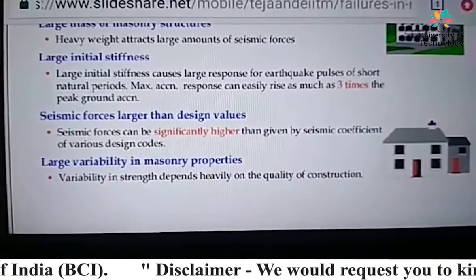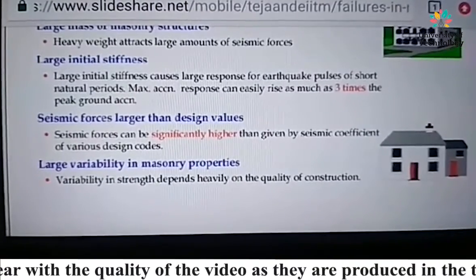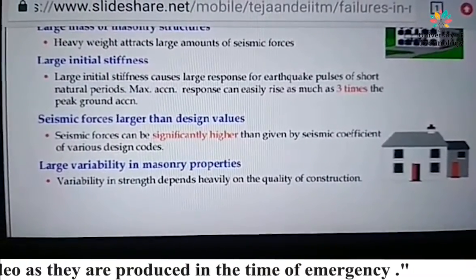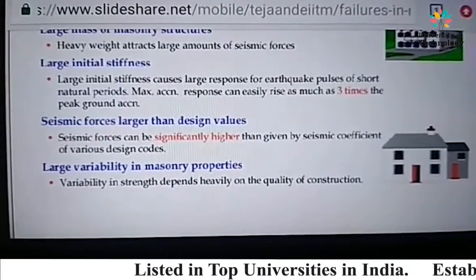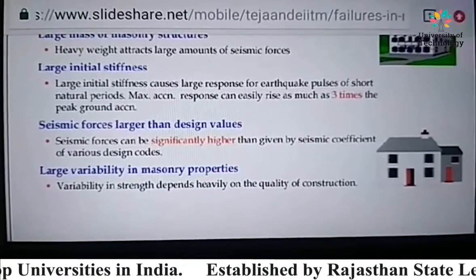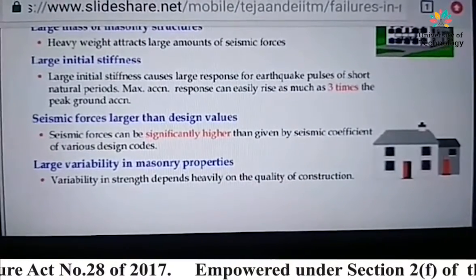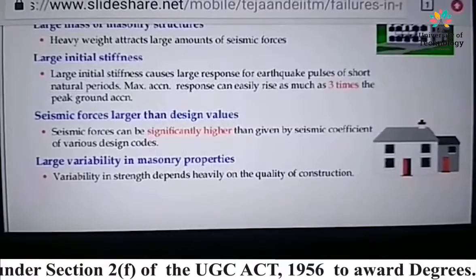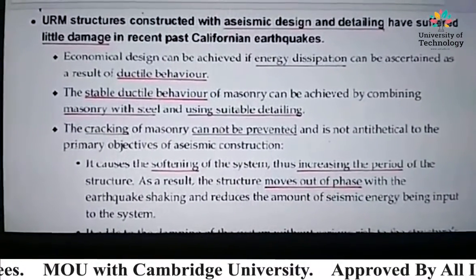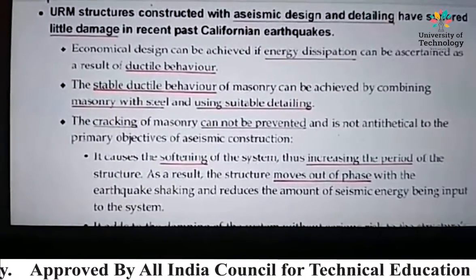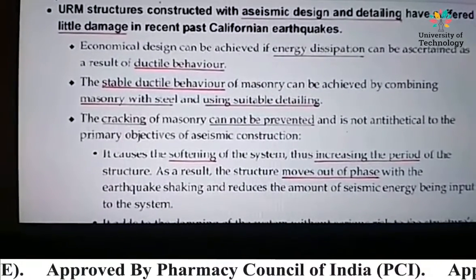Another vulnerability is seismic forces larger than design value. Seismic forces can be higher than the seismic coefficient given for particular buildings as per design codes. Next is large variability in masonry properties. Variability in strength depends heavily on the quality of construction, and there are several important factors which affect the seismic behavior of a particular building.